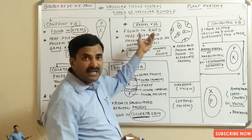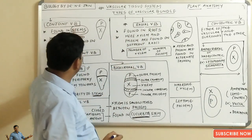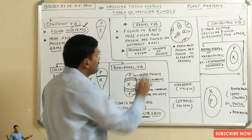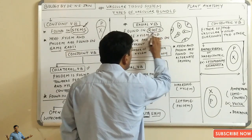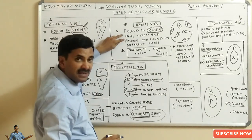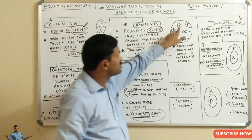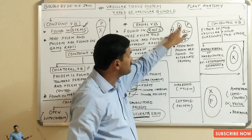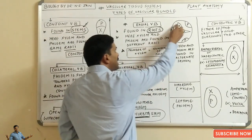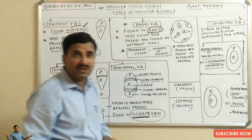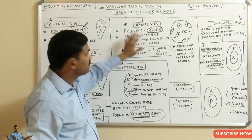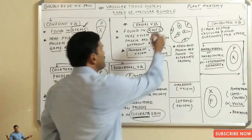Now coming to the second type of vascular bundle — the radial vascular bundle. There is a great difference between the conjoint and radial vascular bundle. Conjoint vascular bundles are a feature of stems, while radial vascular bundles are a feature of roots. In the radial vascular bundle, xylem and phloem are not found on the same radii; they are found on different radii in an alternate fashion — xylem, phloem, xylem, phloem. Also, the number of xylem strands equals the number of phloem strands.